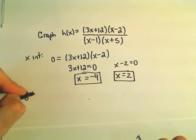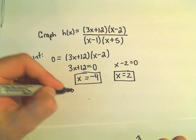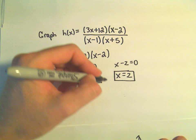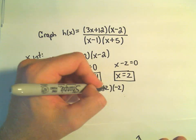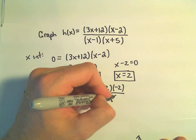To find the y-intercept, we just let x equal 0. And if we plug in x equals 0, we'll get 3 times 0 plus 12, 0 minus 2. It looks like on the bottom we'll have negative 1 times 5.